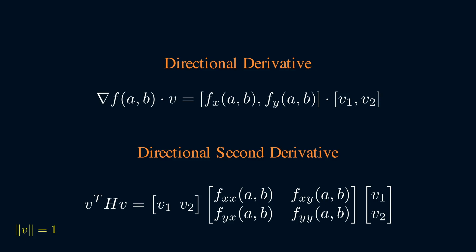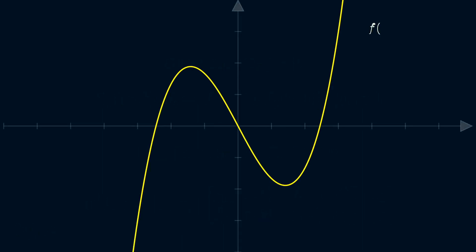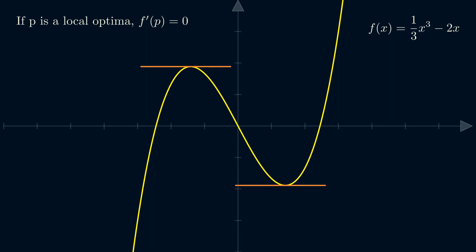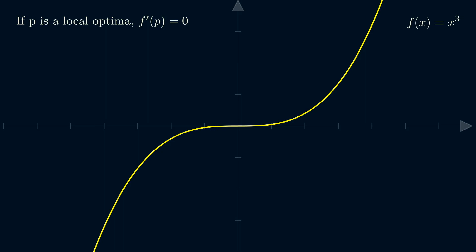Now there are a lot of implications to all of this — I'll show an example from optimization. The first derivative test says that at a local max or min, the first derivative is zero, meaning a flat tangent line at these points. But the other direction isn't necessarily true: we could have a zero derivative but not a local max or min, as seen with the function x cubed. At x equals zero we have a zero derivative, but it's not a local maximum or minimum. In math lingo, a zero derivative is necessary but not a sufficient condition for a local optimum.